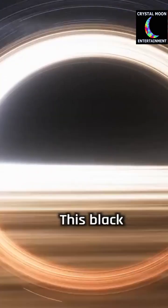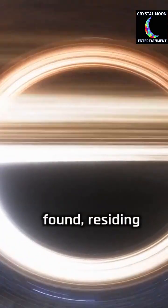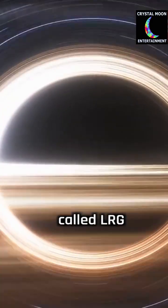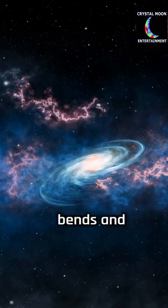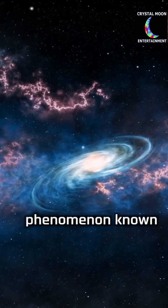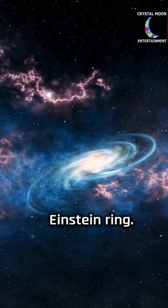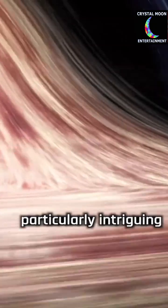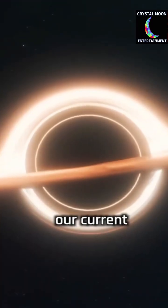This is known as Hill's mechanism, which flings them out at incredible velocities. By tracing the trajectories of these hypervelocity stars back to their origin, researchers were able to pinpoint the location of the hidden black hole within the Large Magellanic Cloud.